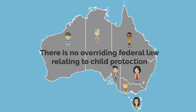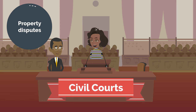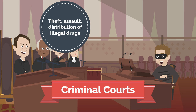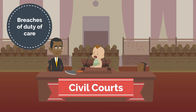Within our legal system there are two avenues for dealing with breaches of laws: the civil courts and the criminal courts. Civil courts deal with civil disputes such as property disputes, suing someone for negligence or debts, and any matters where there is a dispute that does not involve a criminal offense. Criminal courts deal with criminal offenses such as theft, assault, distribution of illegal drugs, public indecency, damage to property, and identity or financial fraud. Matters relating to breaches of duty of care are usually dealt with in the civil courts unless a criminal offense is involved.